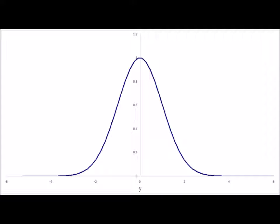Hello. In this video, we are going to look at detailed graphs of the wave function solutions for the harmonic oscillator problem in quantum mechanics. Here we see the n equals zero solution, the ground state for the harmonic oscillator.